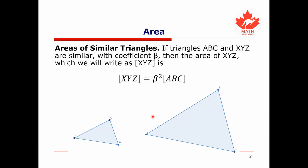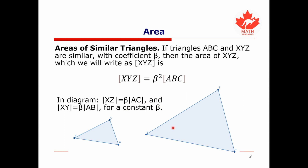Now we can talk about the area of similar triangles. If we have two triangles ABC and XYZ that are similar with constant of proportionality beta, then the area of triangle XYZ is beta squared times the area of the smaller triangle ABC. So the area of the larger triangle is beta squared times the area of the smaller triangle.